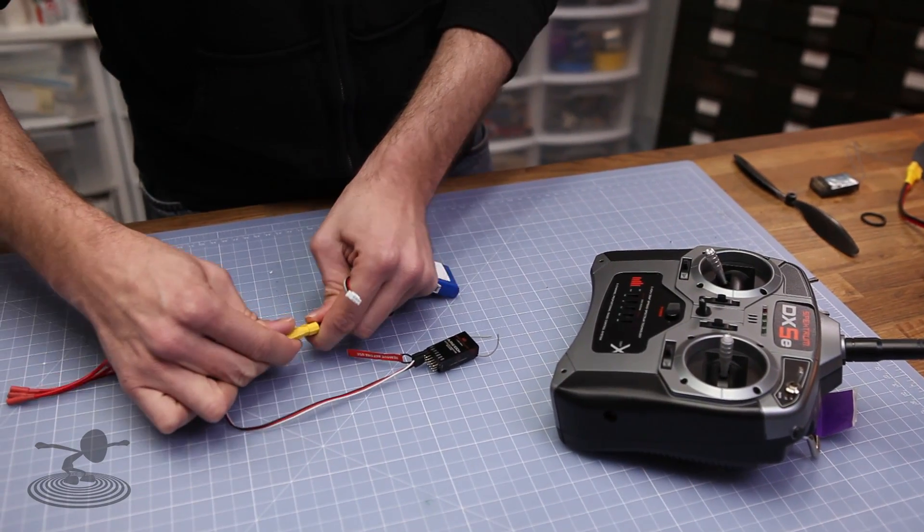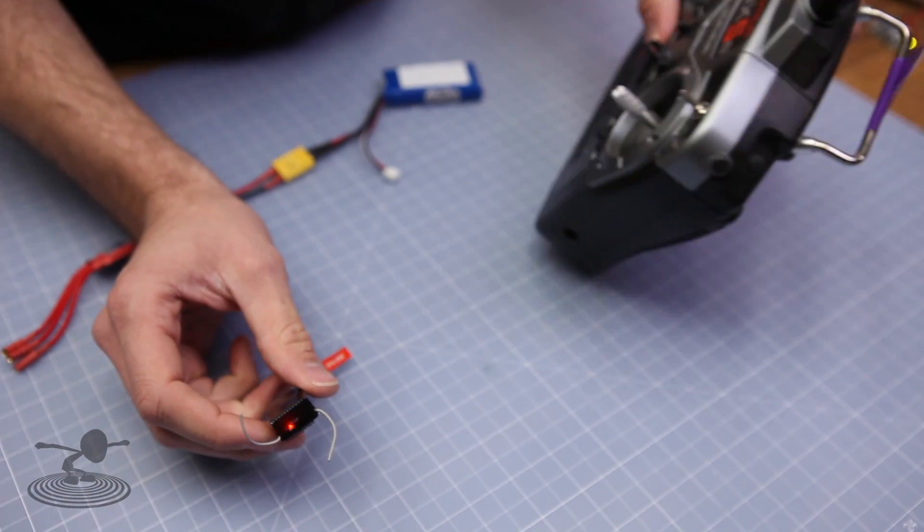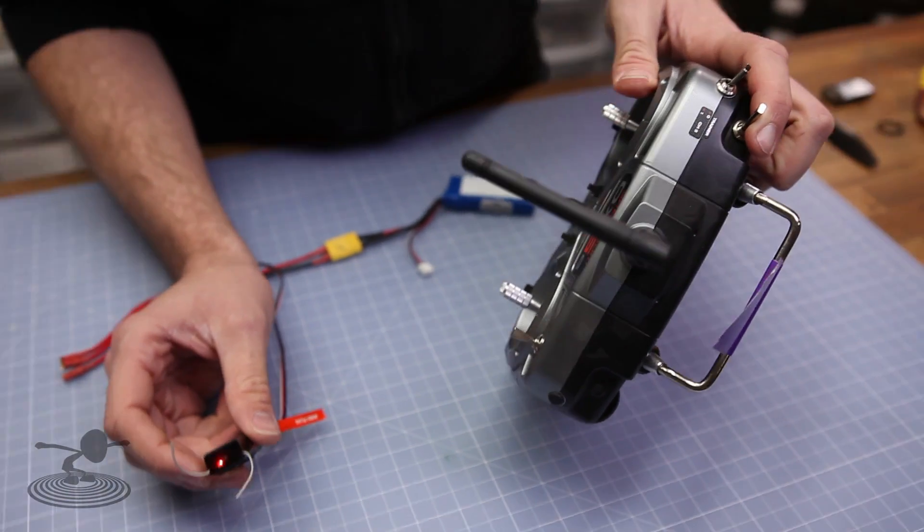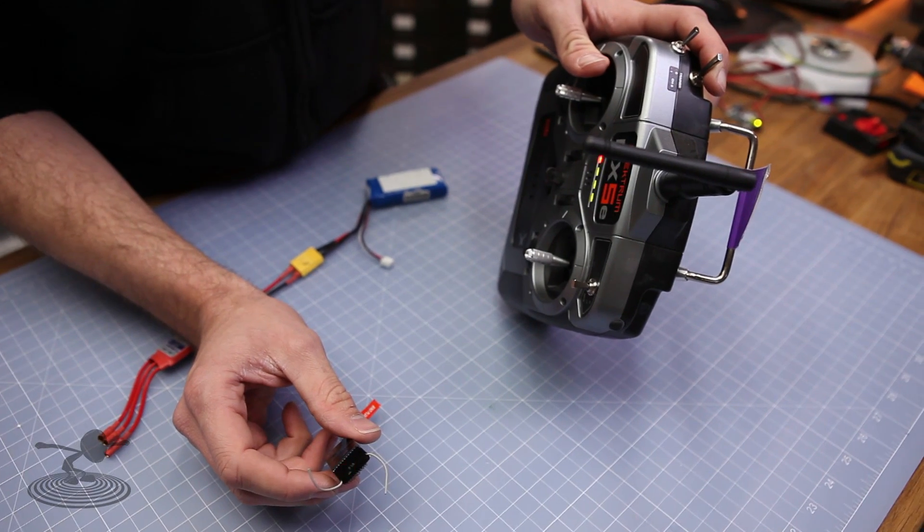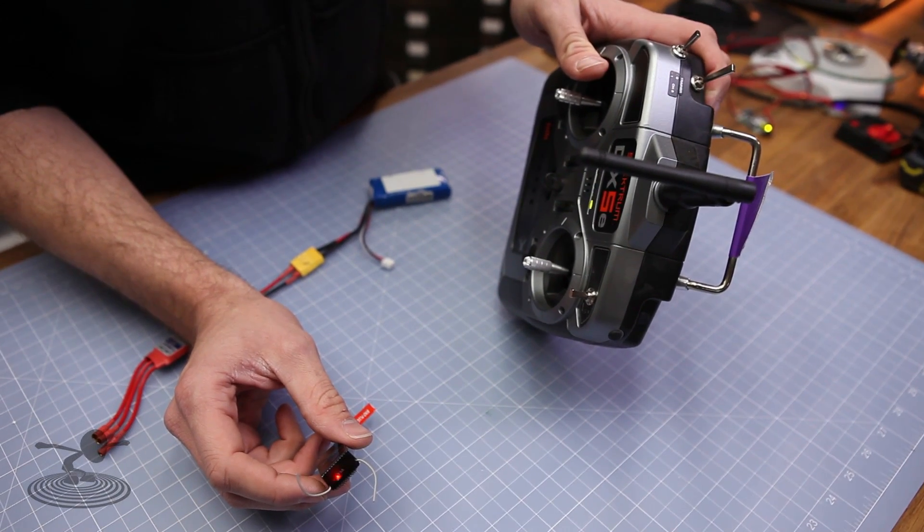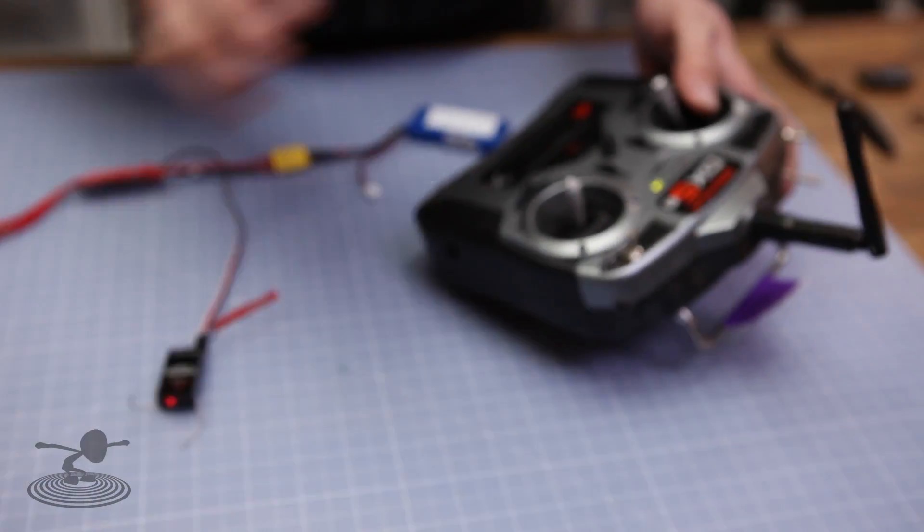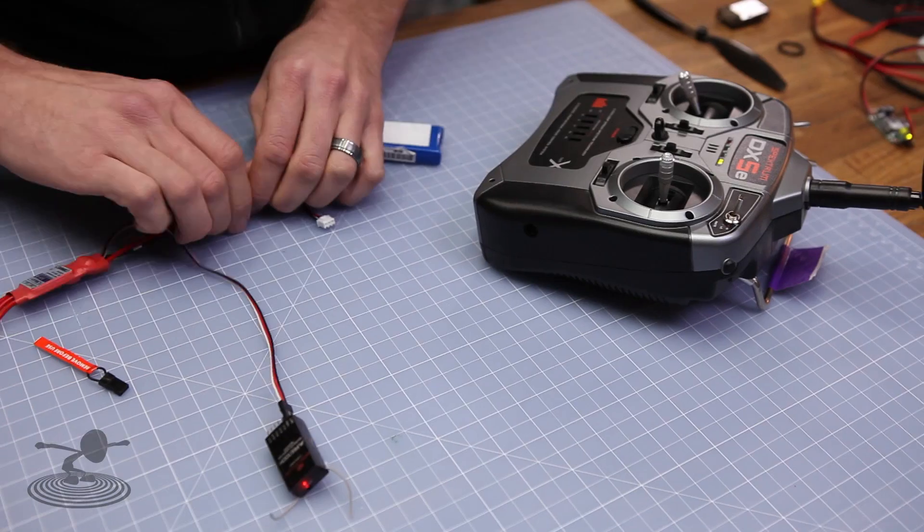The next step is to simply take our battery, hook it up, and if we did everything right you're going to see a flashing light. We're going to hold down our trainer switch and with throttle closed we're going to turn it on while holding the trainer switch. Once it stops flashing we're bound. We have a solid light that means that this is now talking directly to this transmitter and they're linked up. We can remove our bind plug and power it down.